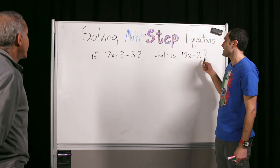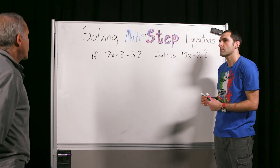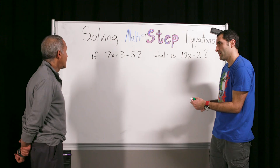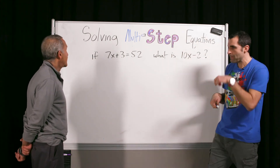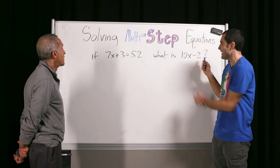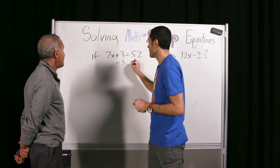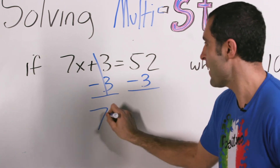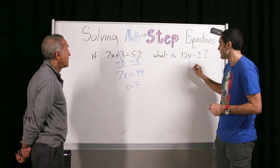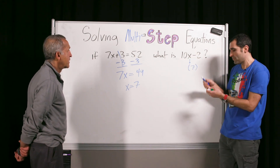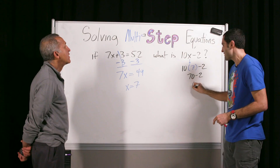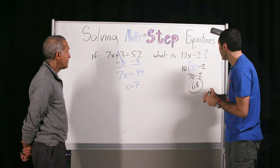If 7x minus 3 is 52, what is 10x minus 2? What should we do first? Solve for x — subtract 3 from both sides, then divide by 7. Minus 3 on both sides: 7x equals 49. Divide by 7: x equals 7. Now instead of 10 times x minus 2, it's 10 times 7 minus 2. 70 minus 2 is 68. Well done. One more round.